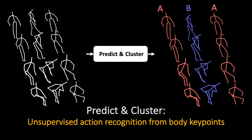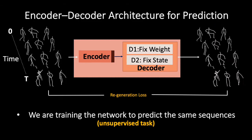Predict and Cluster is a novel system for unsupervised action recognition from body keypoints. The system is based on an encoder-decoder recurrent neural network.